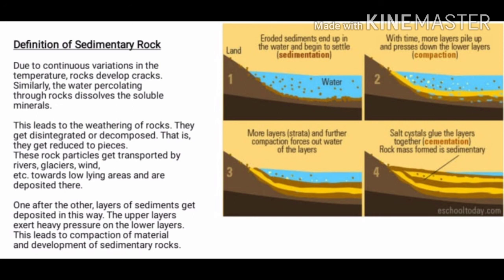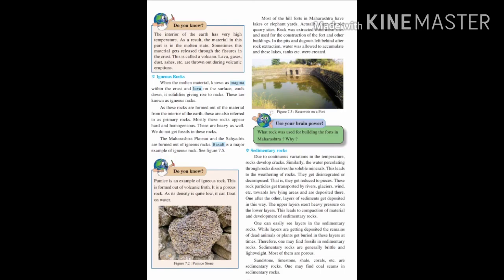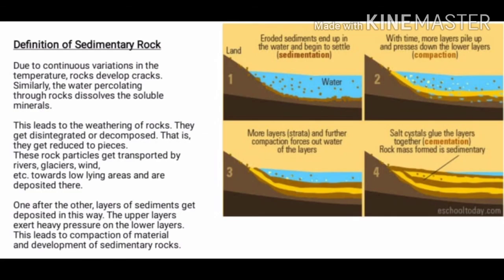Due to continuous variations in temperature, rocks develop cracks. Similarly, water percolating through rocks dissolves soluble minerals — this leads to the weathering of rocks. They get disintegrated or decomposed, reduced to pieces. These rock particles get transported by rivers, glaciers, and wind towards low-lying areas and are deposited there. One after another, layers of sediments get deposited. The upper layers exert heavy pressure on the lower layers, leading to compaction of material and the development of sedimentary rocks.